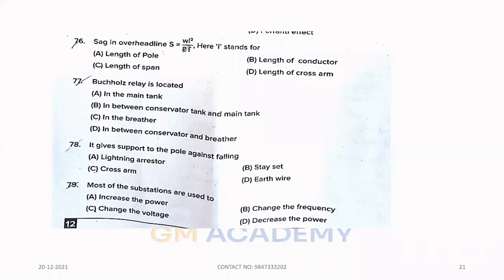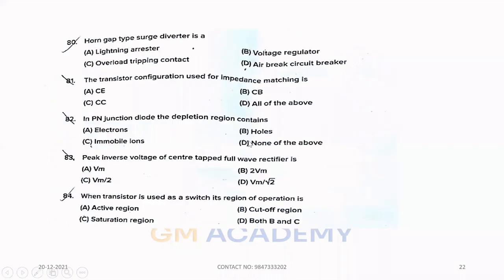Seventy-six. Sag in overhead line. S equals WL square divided by 8T. Here L stands for, option C, length of span. Seventy-seven. Buchholz relay is located. Option B, in between conservator tank and main tank. Seventy-eight. It gives support to the pole against falling. Option B, stay set.